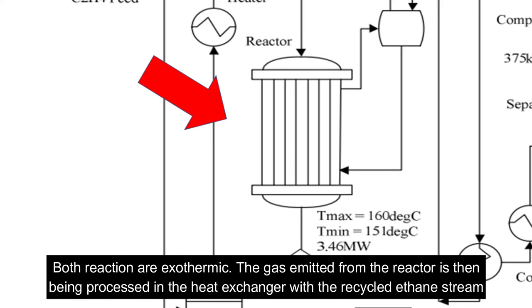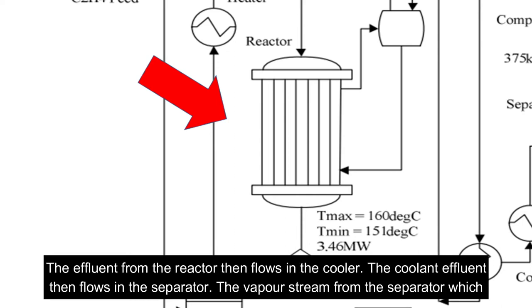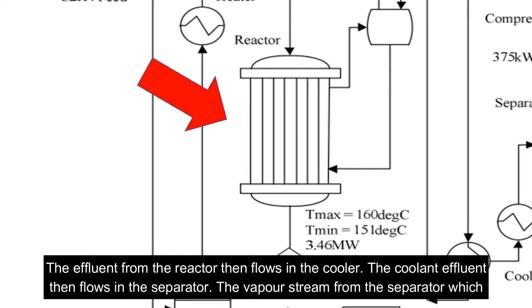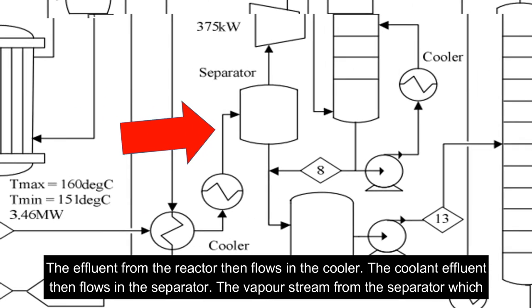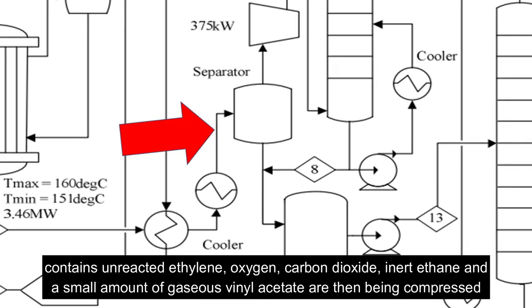The gas emitted from the reactor is processed in the heat exchanger with the recycled ethane stream. The effluent from the reactor then flows in the cooler. The coolant effluent then flows in the separator. The vapor stream from the separator, which contains unreacted ethylene, oxygen, carbon dioxide, inert ethane, and a small amount of gaseous vinyl acetate, is then compressed in the compressor.